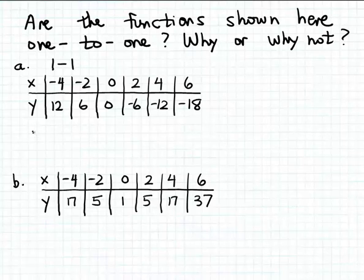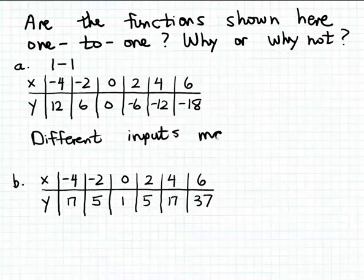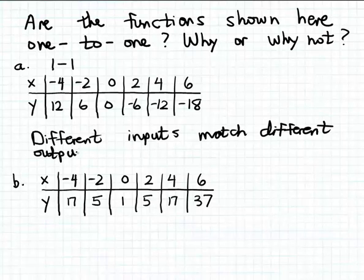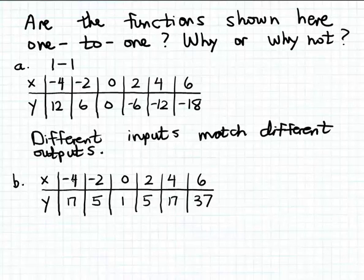That's the case because different inputs match different outputs. On the other hand, if you look at this function represented by this table in part b, notice that there are lots of examples of different inputs that match the same output. Notice that -4 and positive 4 both match the same output, 17. In other words, these two x values, -4 and 4, match the same y value, 17.